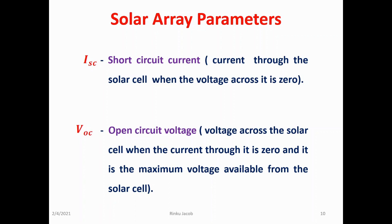We will be discussing a few solar array parameters. The first one is the short circuit current, denoted by ISC. It is the current through the solar cell when the voltage across it is zero. The second parameter is the open circuit voltage, denoted by VOC. It is the voltage across the solar cell when the current through it is zero, and it is the maximum voltage available from the solar cell.